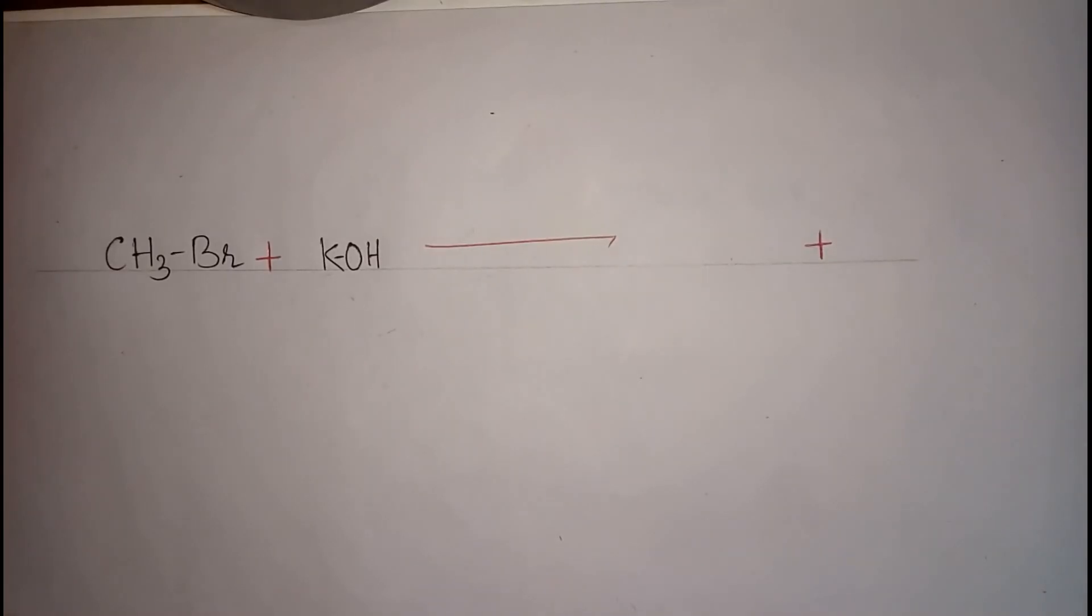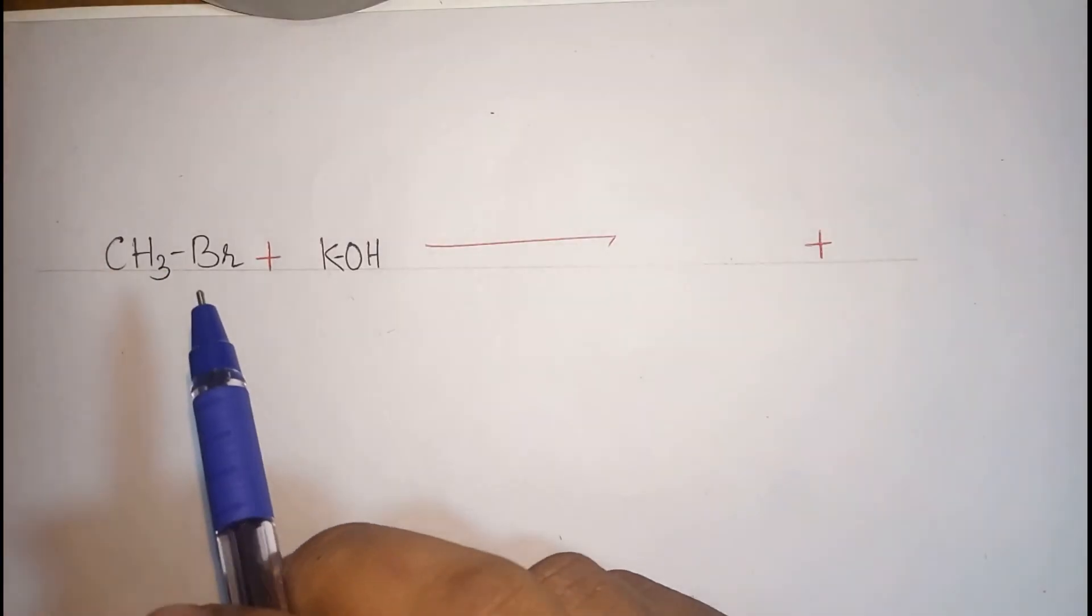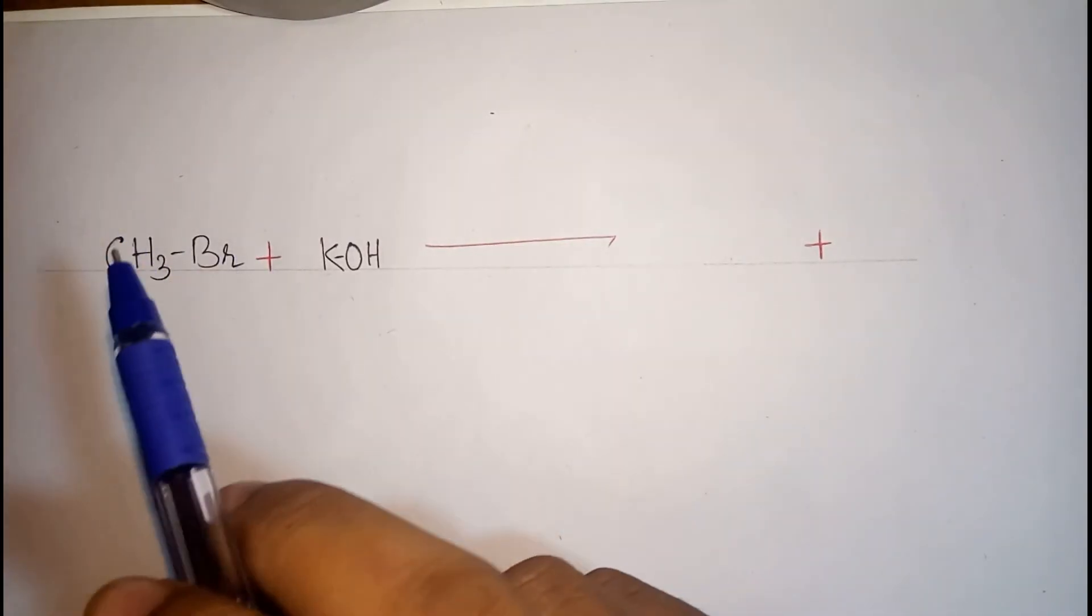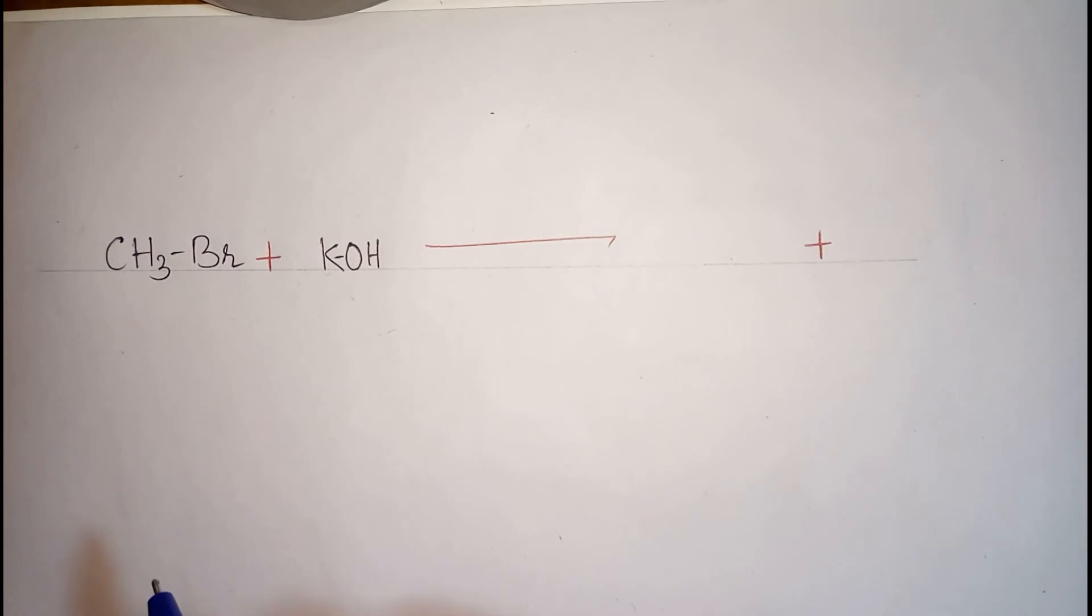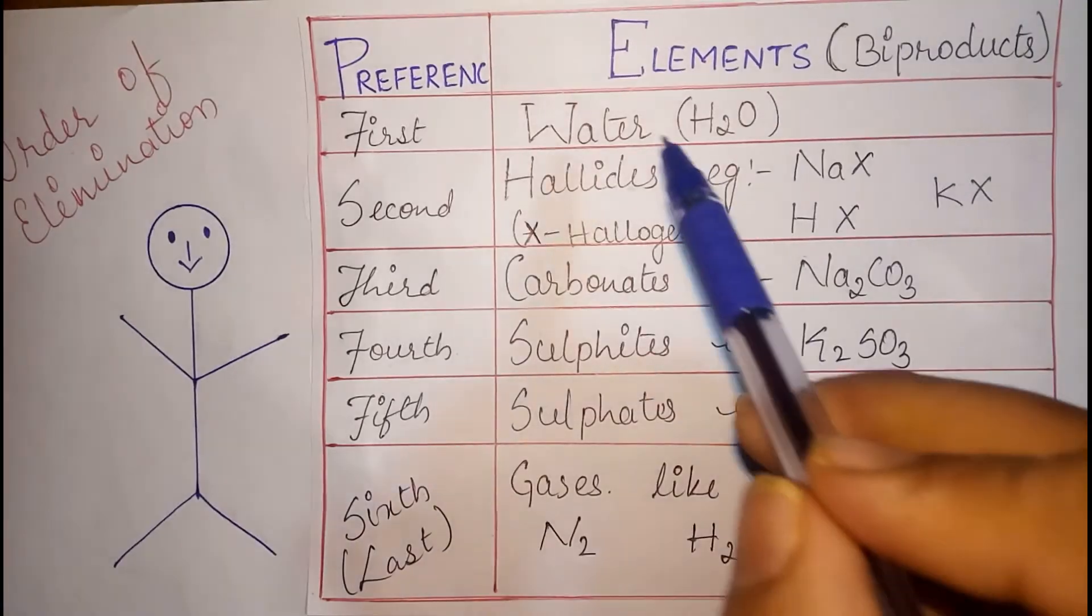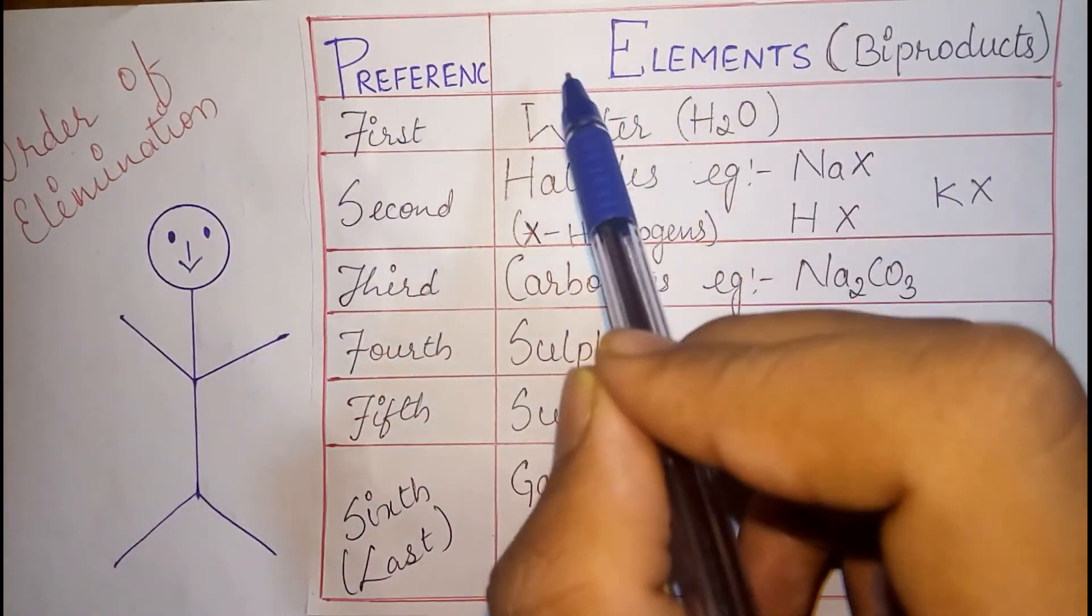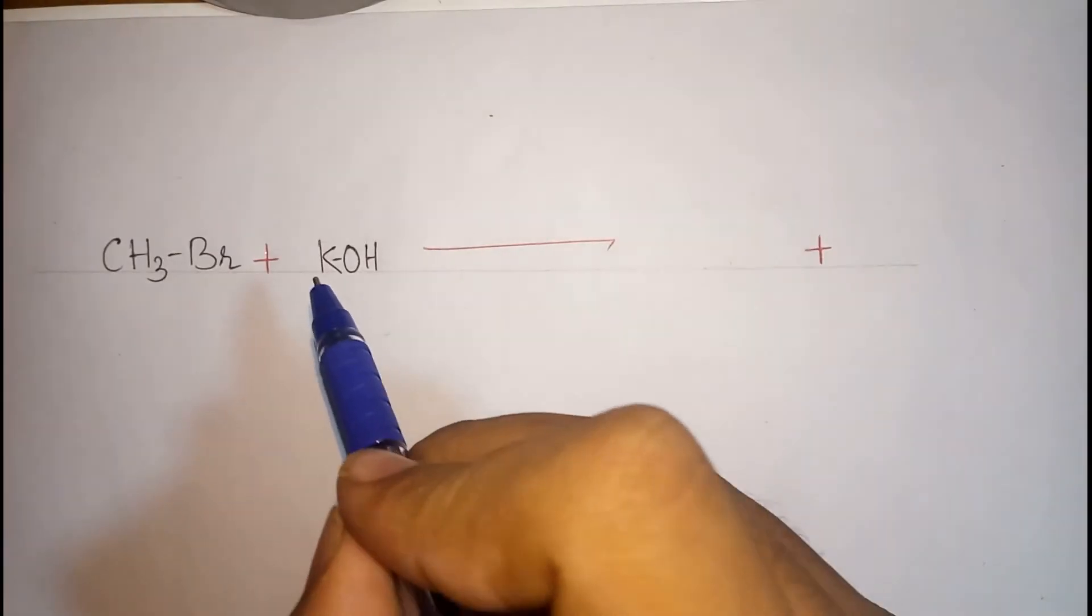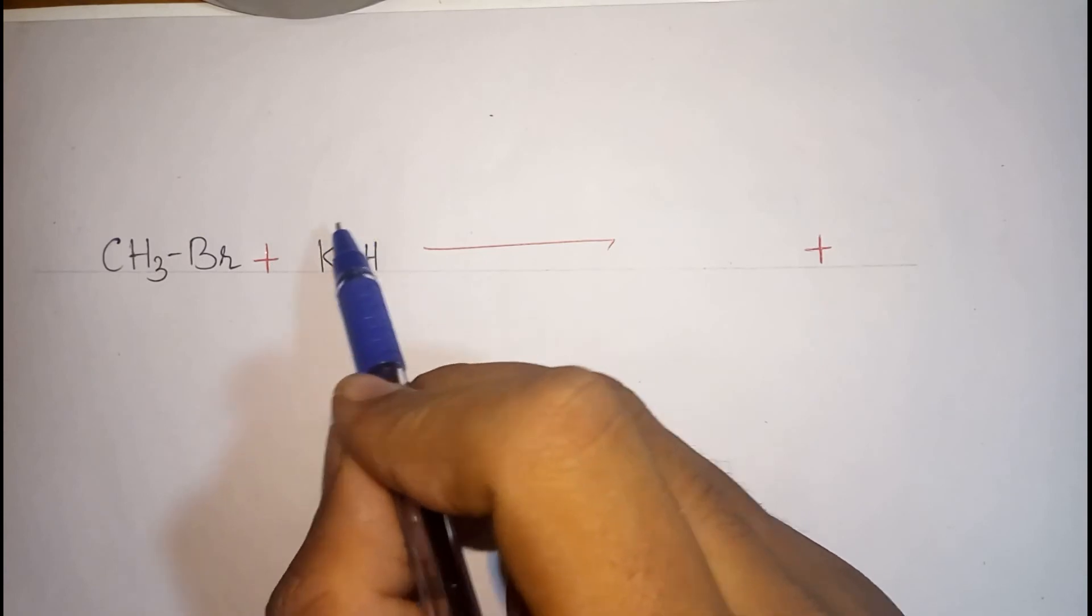I assume that you understood the previous problem. Now let us take one more example that helps us to understand about this table. Consider methyl bromide reacting with potassium hydroxide i.e. KOH. Now according to the table first preference should be given to water.